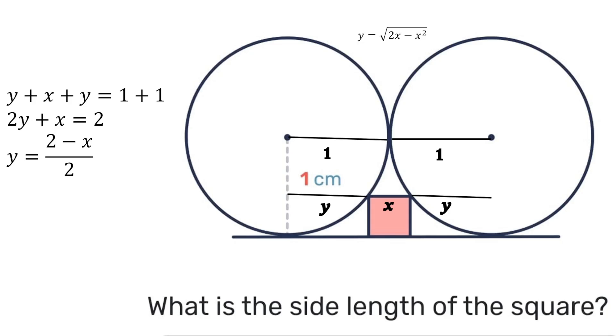We can also make another substitution because previously we knew that y is equal to the square root of 2x minus x squared. So we'll have that the square root of 2x minus x squared is equal to 2 minus x all divided by 2. Unfortunately we have a square root but fortunately we can get rid of it easily by squaring both sides. So let's see what we get when we do so.